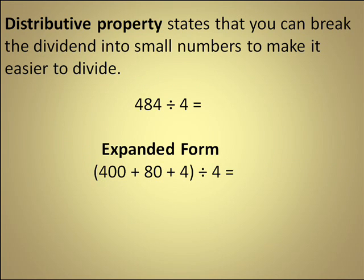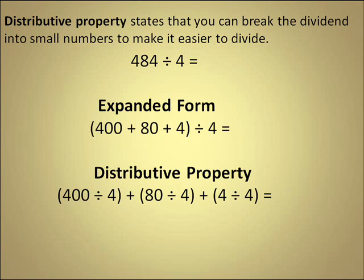Now this is one way of representing a distributive property. As you can see, that the sum of 400 plus 80 plus 4 can be divided by 4. Now if we wanted to make this simpler to see, we can distribute our divisor to each one of our parts of our dividend. As you see below, we've got 400 divided by 4 plus 80 divided by 4 plus 4 divided by 4.